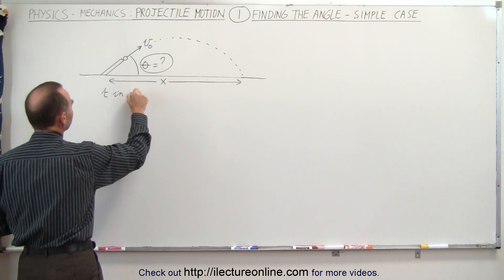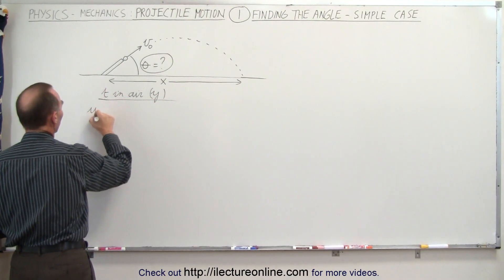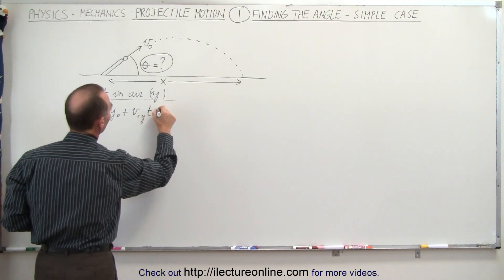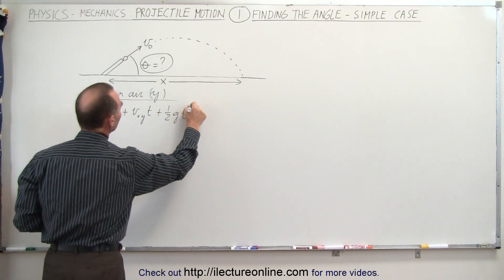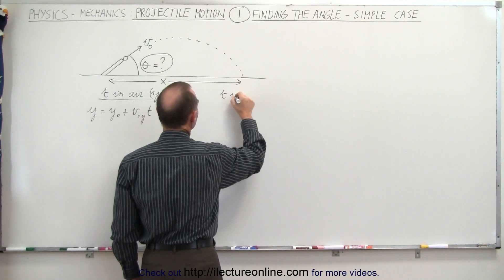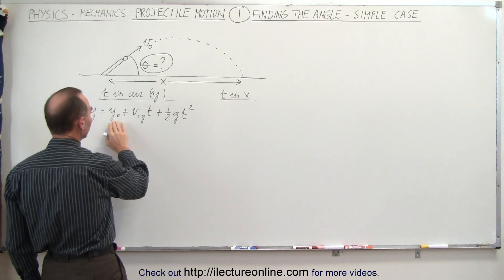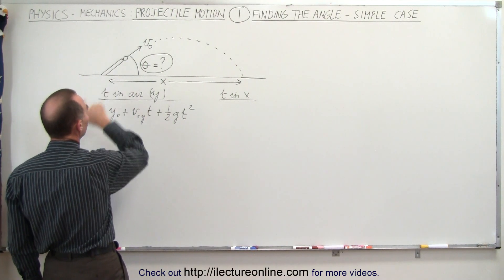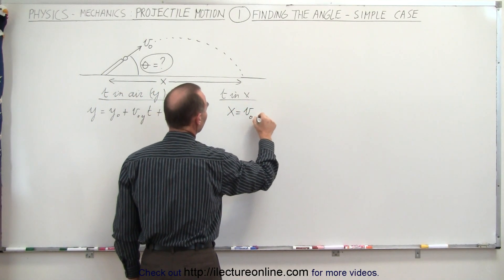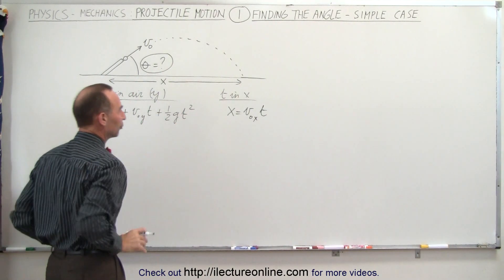For time in the air, first we do the y direction. We take our equation: y equals y sub naught plus v sub naught in the y direction times time, plus one half g t squared. In the x direction there's no acceleration and x sub naught equals zero, so the equation simplifies to x equals v initial in the x direction times time — only the middle term remains.